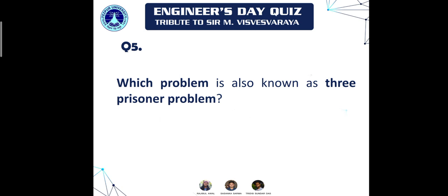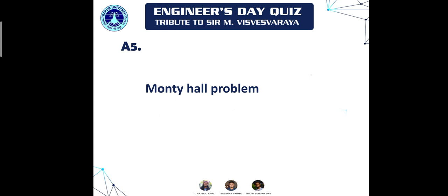Moving on to question five: which problem is also known as the 'Three Prisoners Problem'? The answer is the Monty Hall Problem.